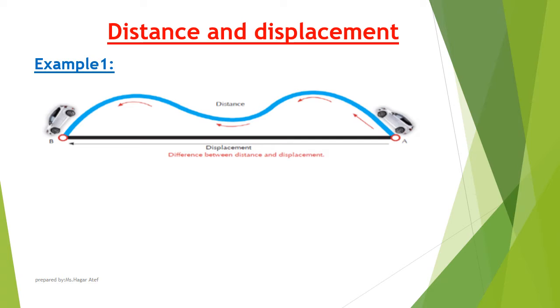When a car moves from position A to position B, as shown in the previous figure, the length of the curved line gives the distance covered by the car.